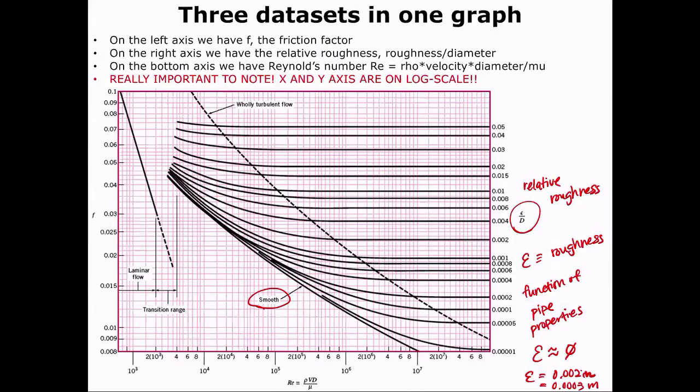So on the right-hand side, you'd have your relative roughness, which is going to be this roughness parameter divided by diameter. So this is actually going to be unitless. On the bottom axis, we have our Reynolds number, which is our density multiplied by velocity, multiplied by diameter, divided by our kinematic viscosity.